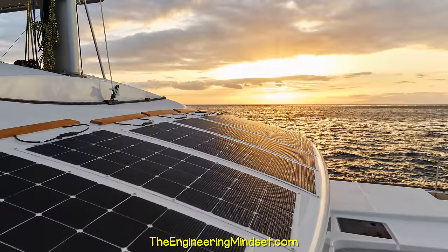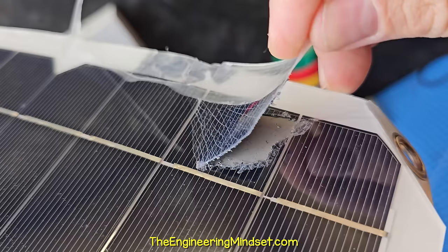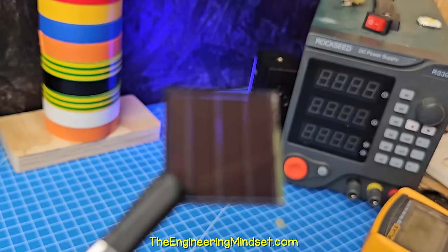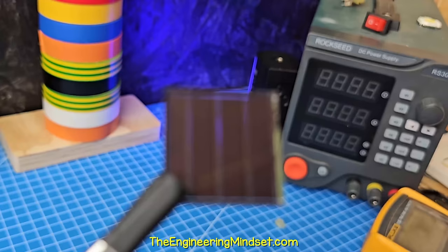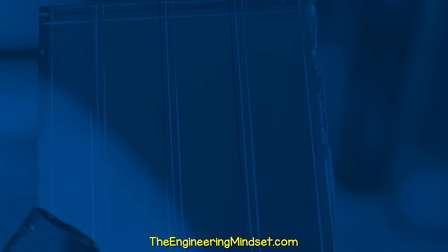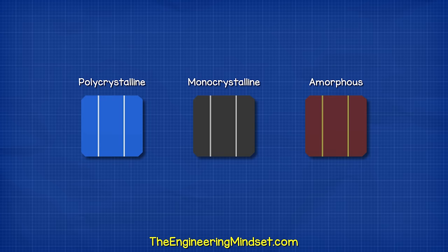We can also get thin film types. This monocrystalline version is flexible, and so is this polycrystalline version. These are often used for curved roofs or vans and boats. It has a shorter lifespan and is less efficient. This garden light and this calculator use thin film amorphous silicon, which has this brown color. The atoms have a random structure with no defined pattern. They are very cheap to produce, but only around 5 to 8% efficient.